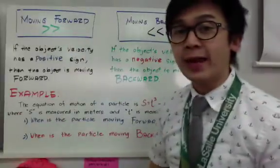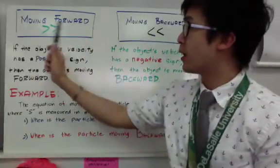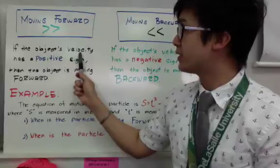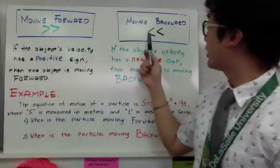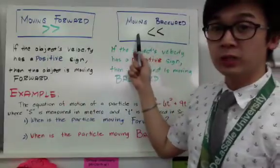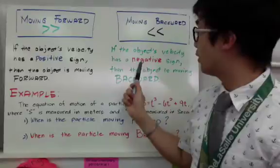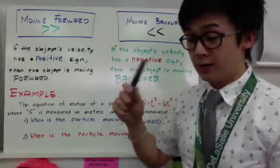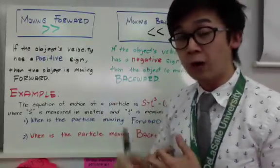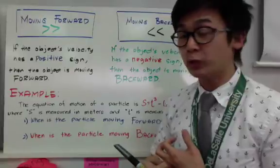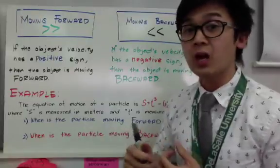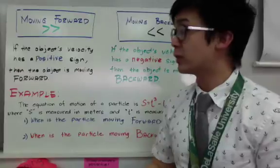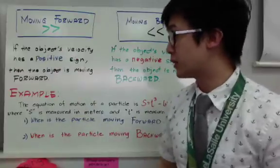An object is moving forward when your velocity's sign is positive, and when moving backwards, the sign of your velocity is negative. The movement of your object in motion is dependent on the sign of your velocity equation. That's what you need to remember in rates of change.